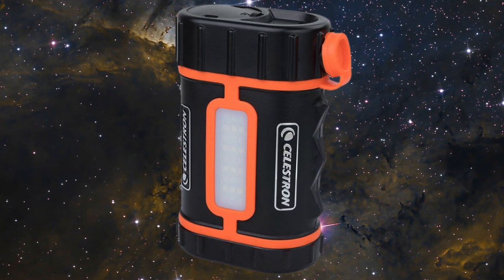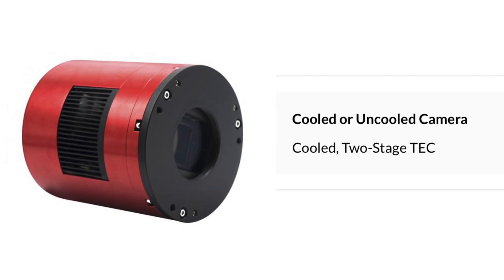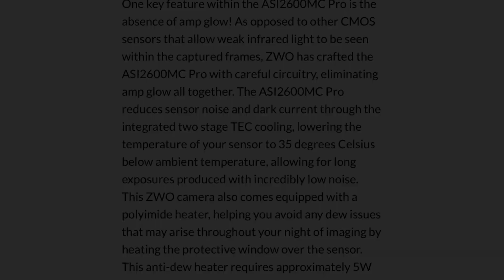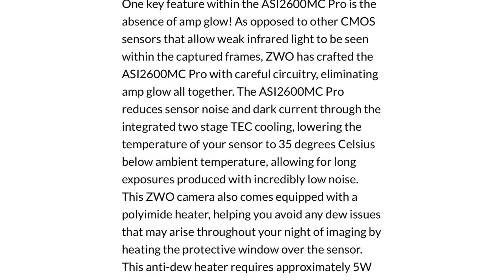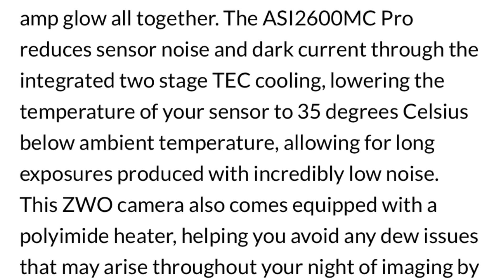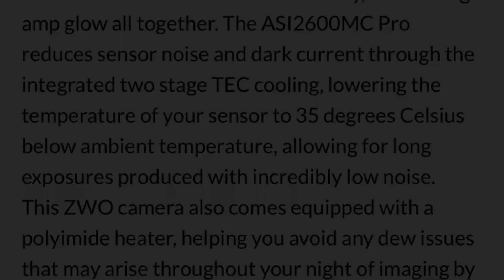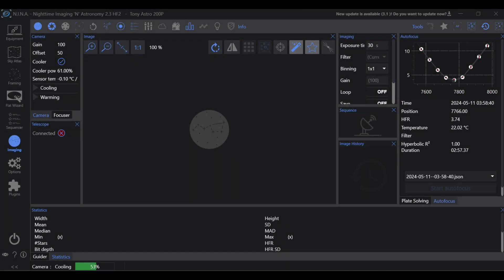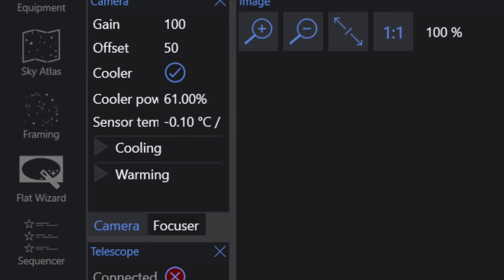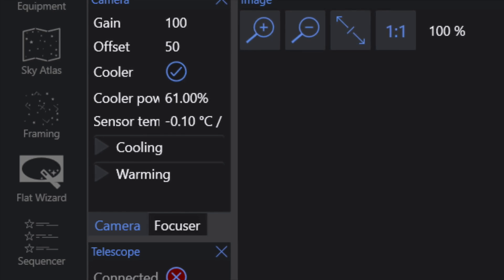Your camera is only capable of cooling the sensor so many degrees below ambient. Usually the temperature is displayed in Celsius, and the TEC cooling plate is good for anywhere between 25°C and 35°C below ambient. If you try to set the temperature too low, your camera cooler power will peg at 100%, and your temperature will not be consistent since the cooler is beyond its capacity.